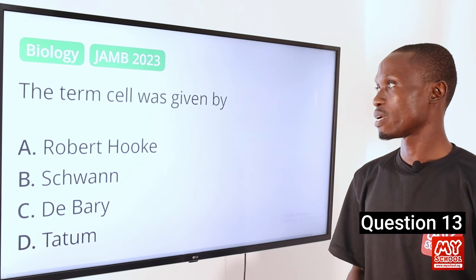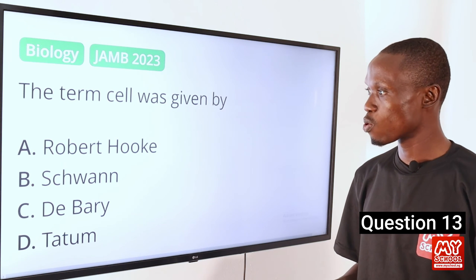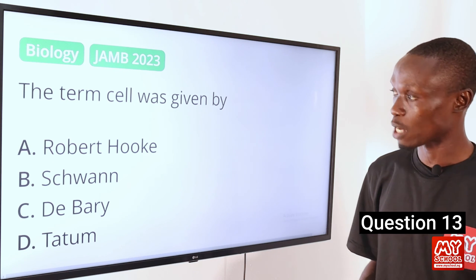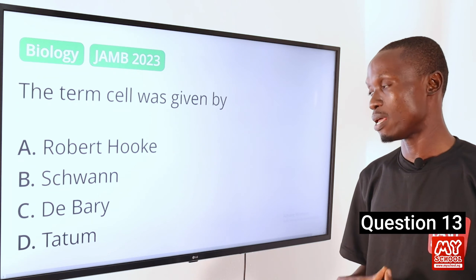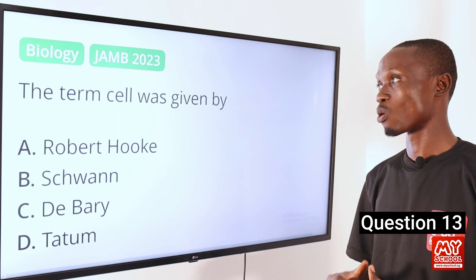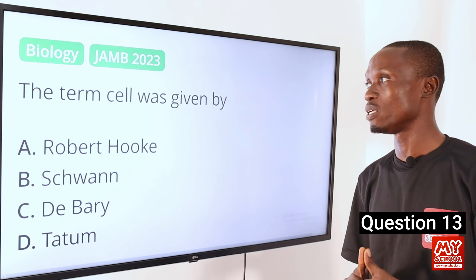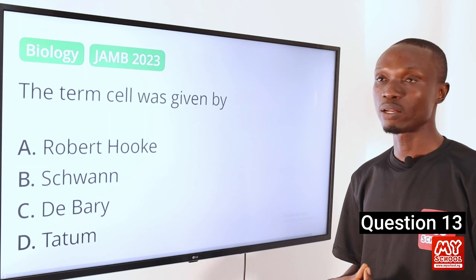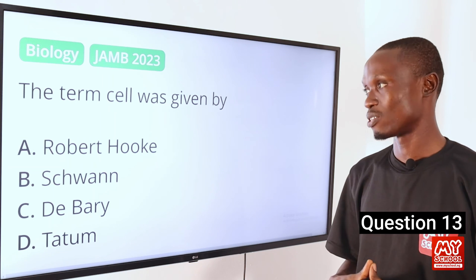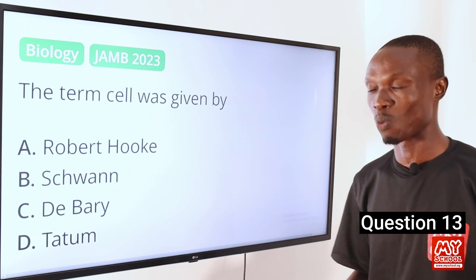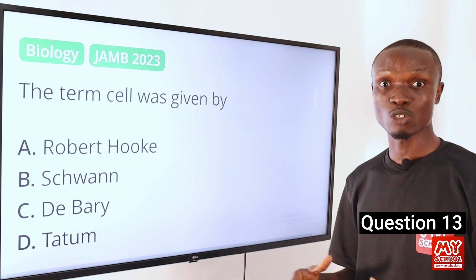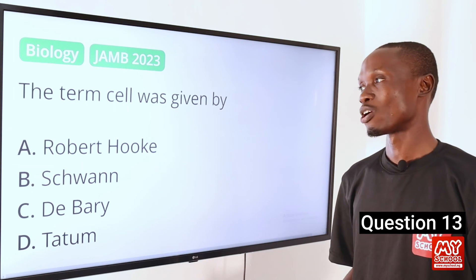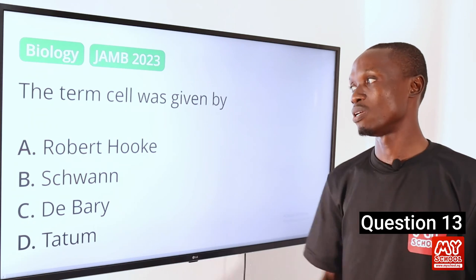Question 13. The term 'cell' was given by — A, Robert Hooke. B, Schwann. D, Dabari. And D, Tanton. The answer is option A, Robert Hooke. Robert Hooke was an English scientist who in 1665 coined the term 'cell' when he observed a thin section of cork under a microscope, and discovered that what he saw resembled the cells in a monastery — hence the word 'cell'.